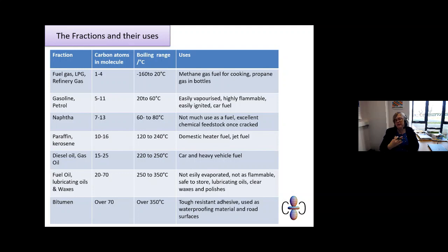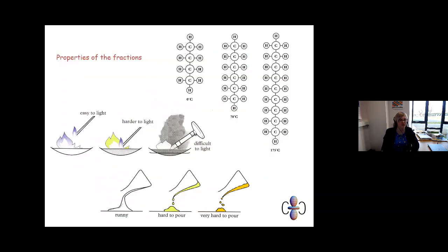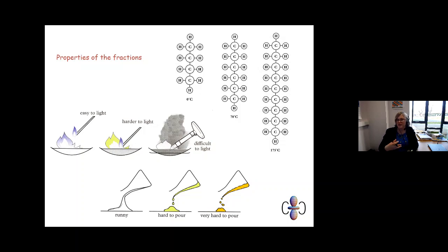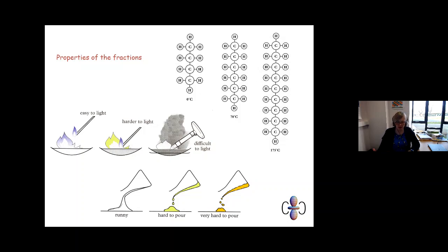Other properties that vary from shorter to longer chains include colour — they become progressively darker. Petrol is a light, yellowy liquid, whereas bitumen is a black substance. They also tend to produce more soot when burning — the flame becomes progressively dirtier. So the key properties to remember are: flammability, viscosity, how cleanly they burn, and colour — all linked to how long the carbon chain is.